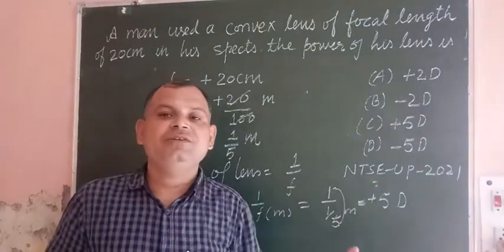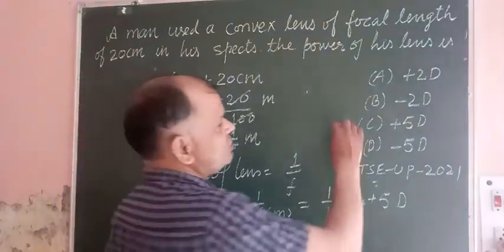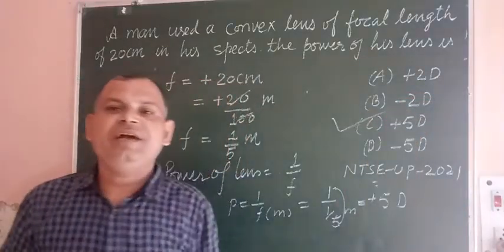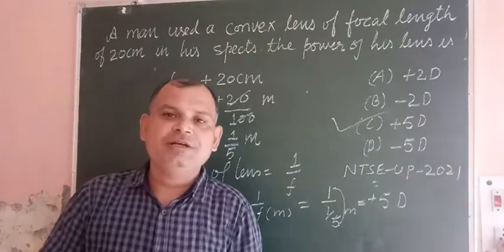So this is the unit of power, the diopter. The answer to this question is C, which is plus 5 diopter. I hope you got it. Thanks very much.